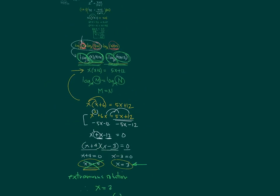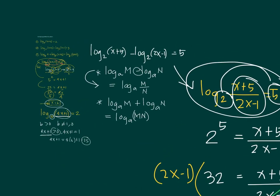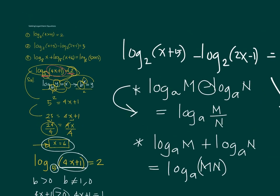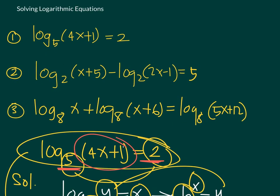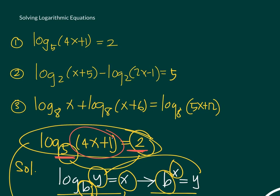These are three examples of logarithmic equations: a simple one converted directly to exponential form; a difference of two logarithms compressed using the quotient law; and a sum of two logarithms compressed using the product law. There are many more types — including those requiring the power law or different bases — but I hope you now understand the basics and can solve equations like these.